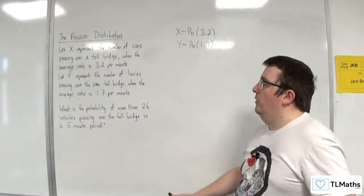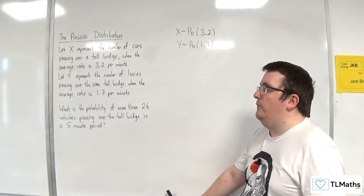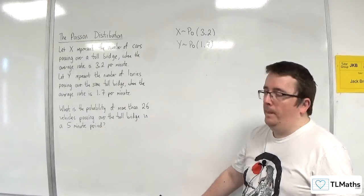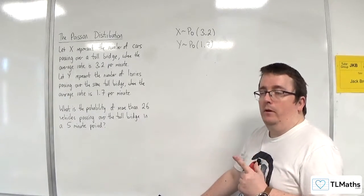What is the probability of more than 26 vehicles passing over the toll bridge in a 5-minute period? So notice the change in time frame as well.